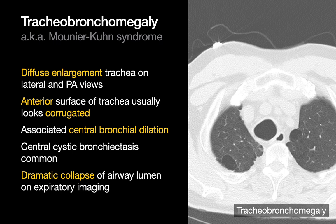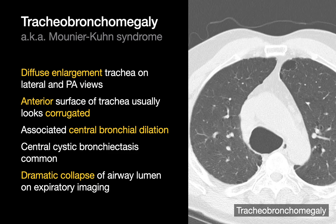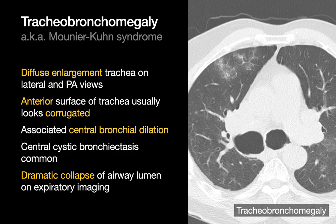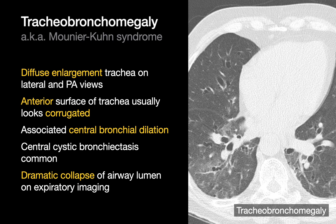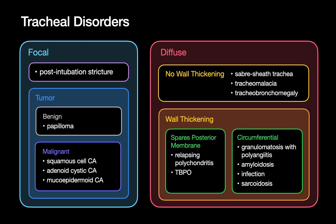In tracheobronchomegaly, the anterior tracheal rings are accentuated as the airway between the rings bulges out, producing a classic corrugated appearance of the anterior tracheal wall, especially on sagittal CT or lateral chest X-ray. This condition is also often associated with central bronchial dilation. Because these areas are so large and flabby, dynamic collapse of the airways is common on expiratory versus inspiratory imaging, similar to what is seen with tracheomalacia.